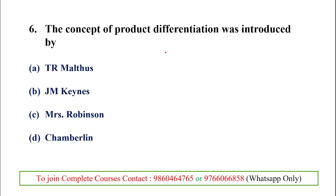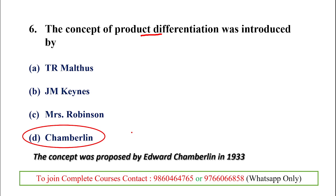The next question asks who introduced the concept of product differentiation. Product differentiation was introduced by Edward Chamberlin in 1933. Product differentiation means products have differences in packaging, advertising, or other qualities, but their usage is the same. For example, different branded smartphones have similarities and differences. This question may also appear as a match-the-following item.